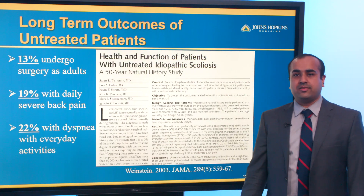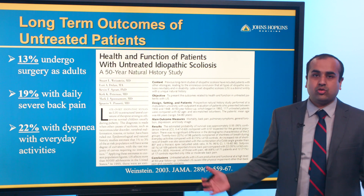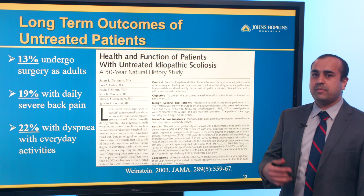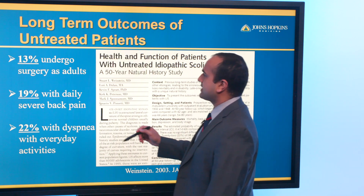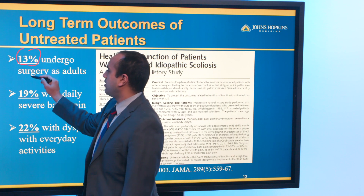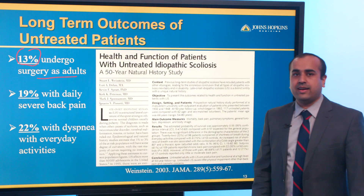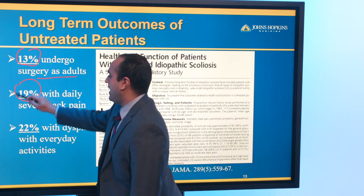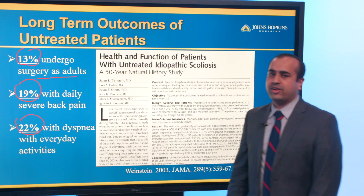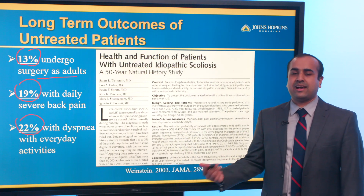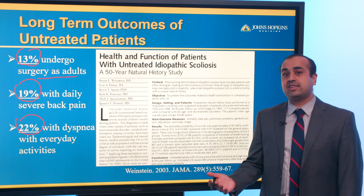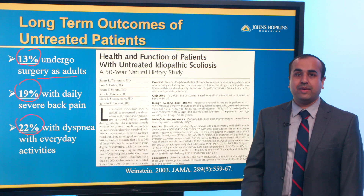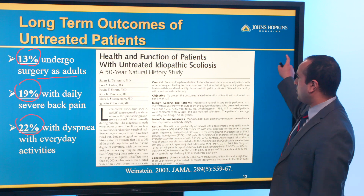What are the long-term implications if curves progress? Based on the long-term study, 13% of patients actually underwent surgery as adults — not an insignificant number. Additionally, 19% had daily severe back pain, and about 22% had difficulty breathing or some kind of shortness of breath. Scoliosis certainly has long-term implications both in terms of back pain and lung development.